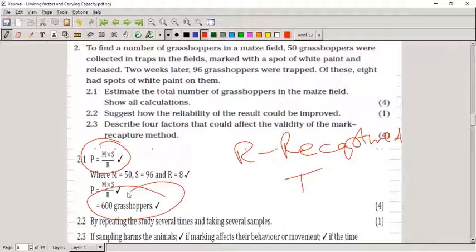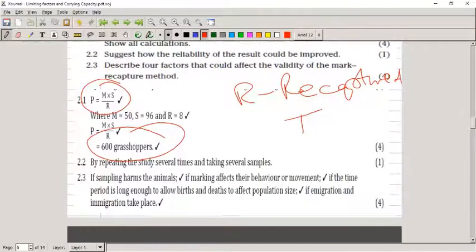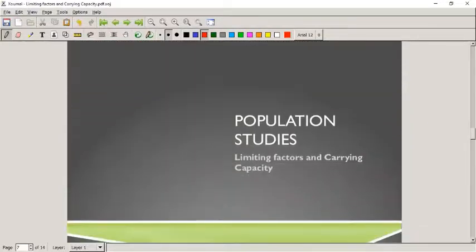Then again, reliability - we increase the sample size, then it becomes more reliable. Describe four factors that affect the validity of the mark-recapture method. If catching the animals hinders the animal in its movement, I'm going to not have an accurate estimate. If the time period is not long enough for them to mix in between one another, I'm going to have a false population estimate. If the time period is too long, I'm going to have immigration, emigration, births, and deaths having an effect on the population size, and so then it's not going to be accurate.